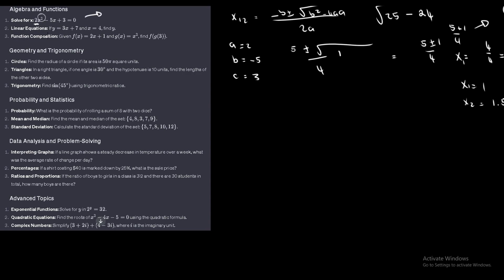Let's look at the second one — the linear equation. If y equals 3x plus 7 and x equals 4, find y. In these situations, all we want to do is substitute what we have. So y equals 3 times 4 plus 7, which is 12 plus 7, which equals 19.